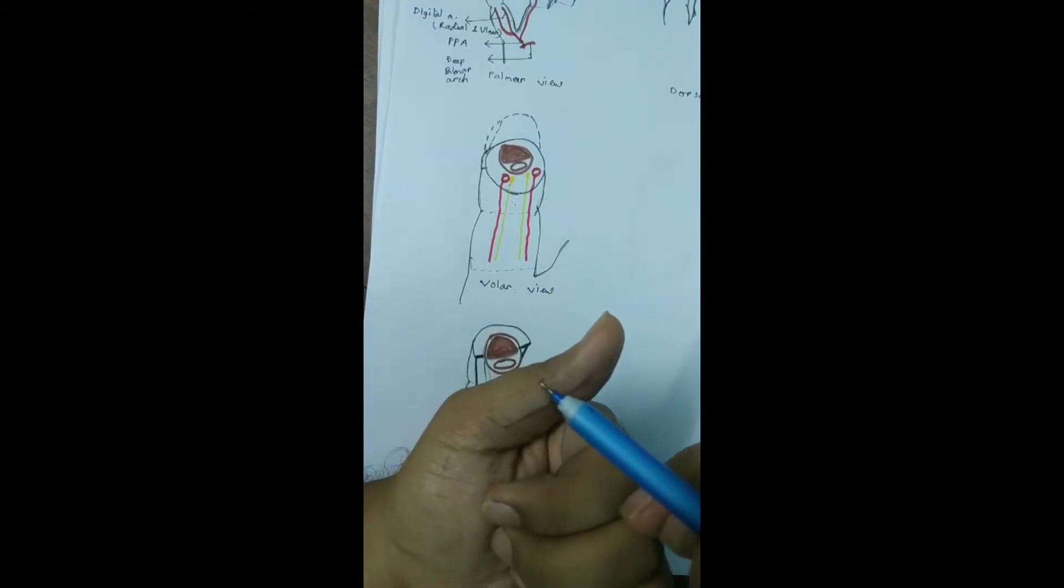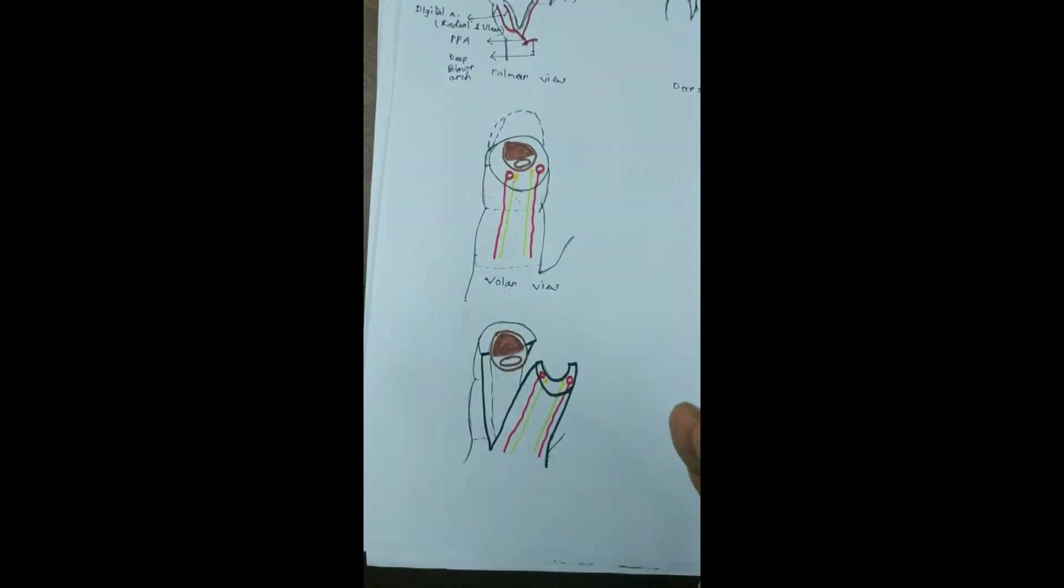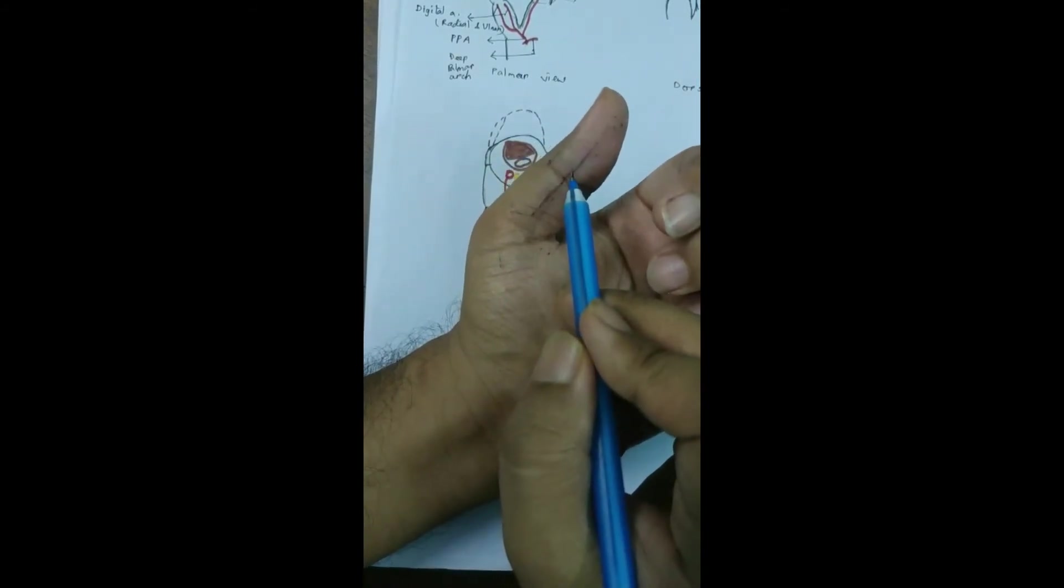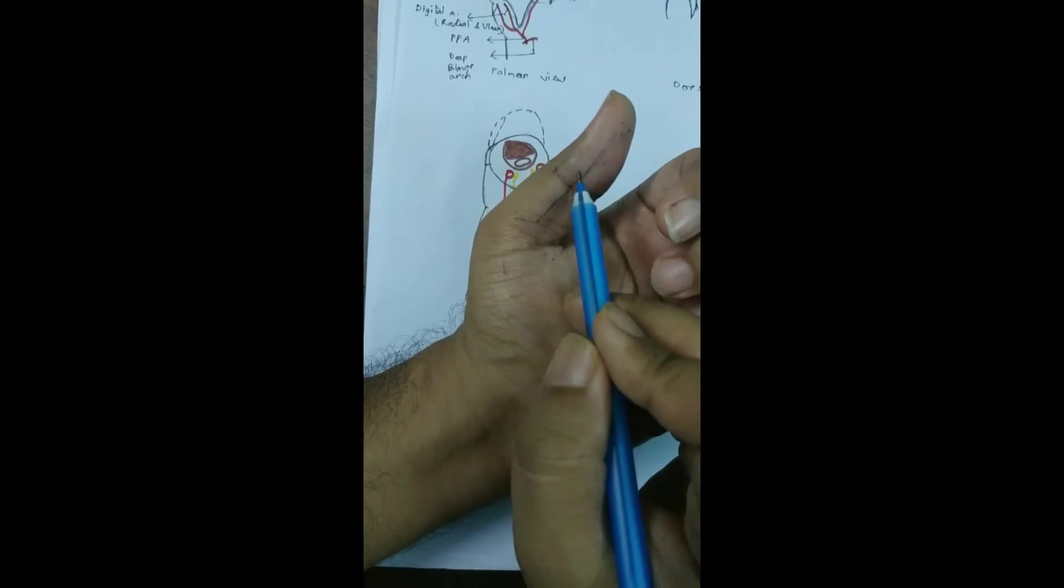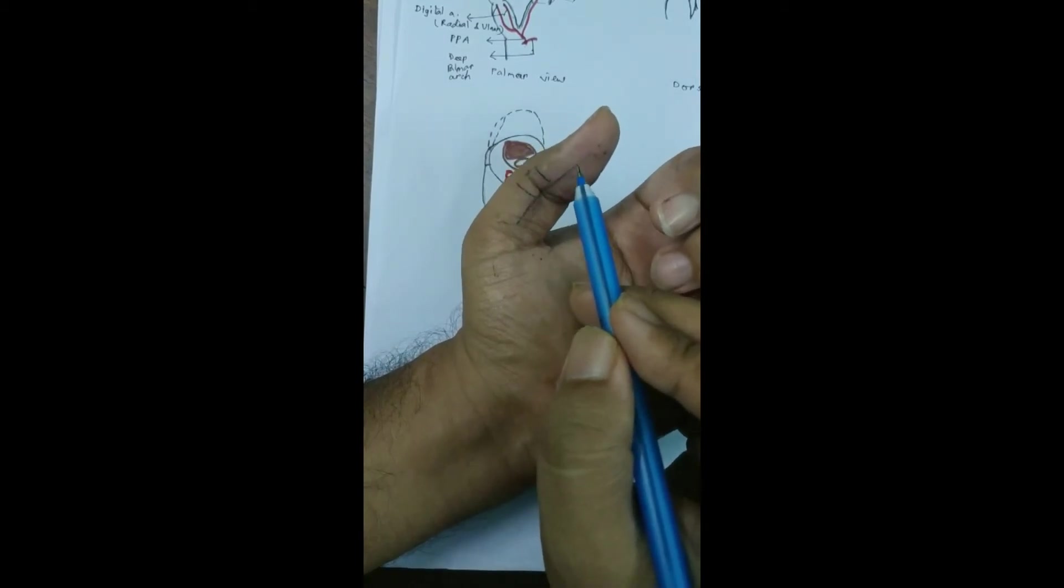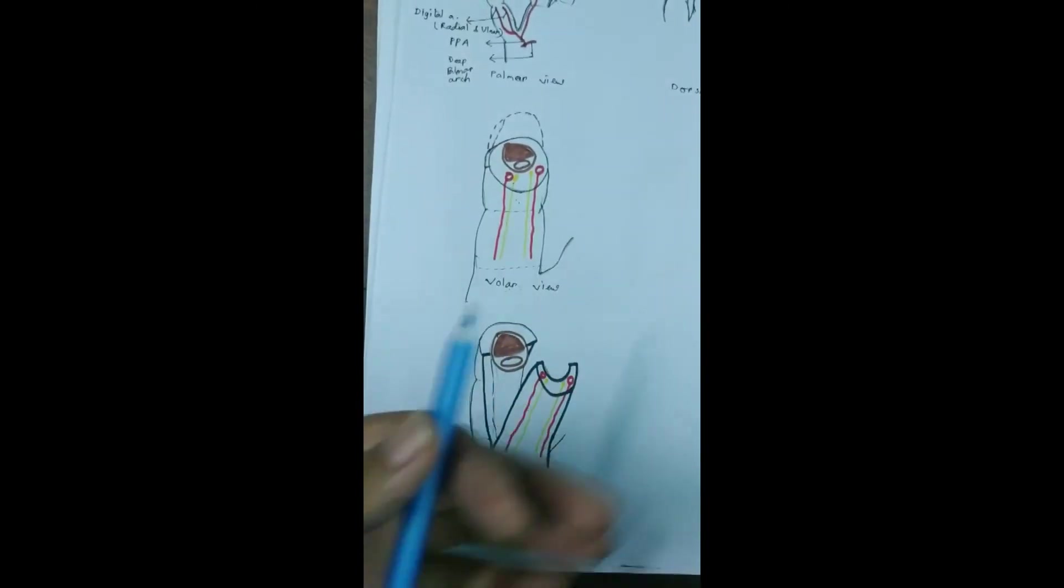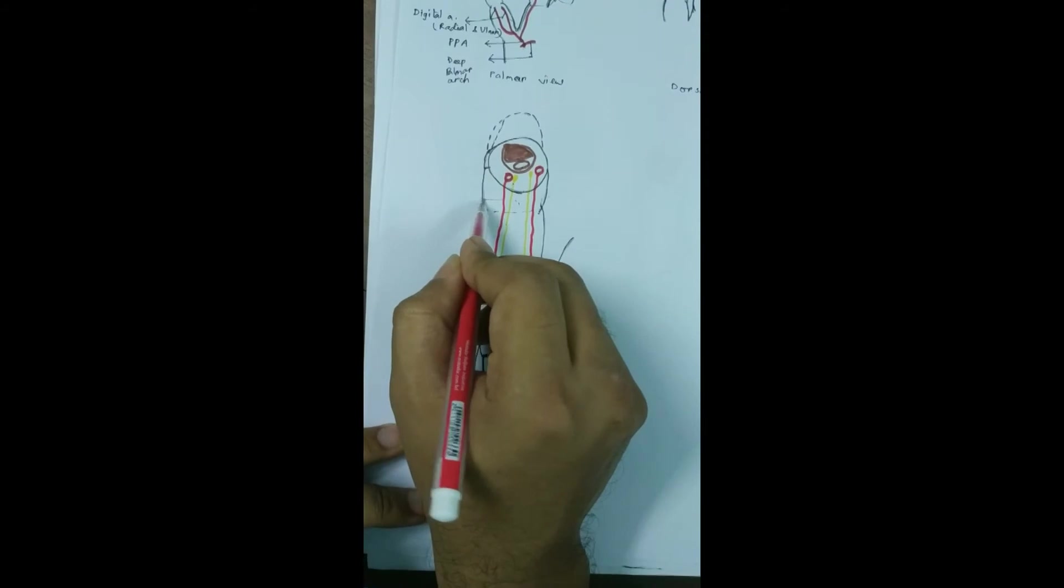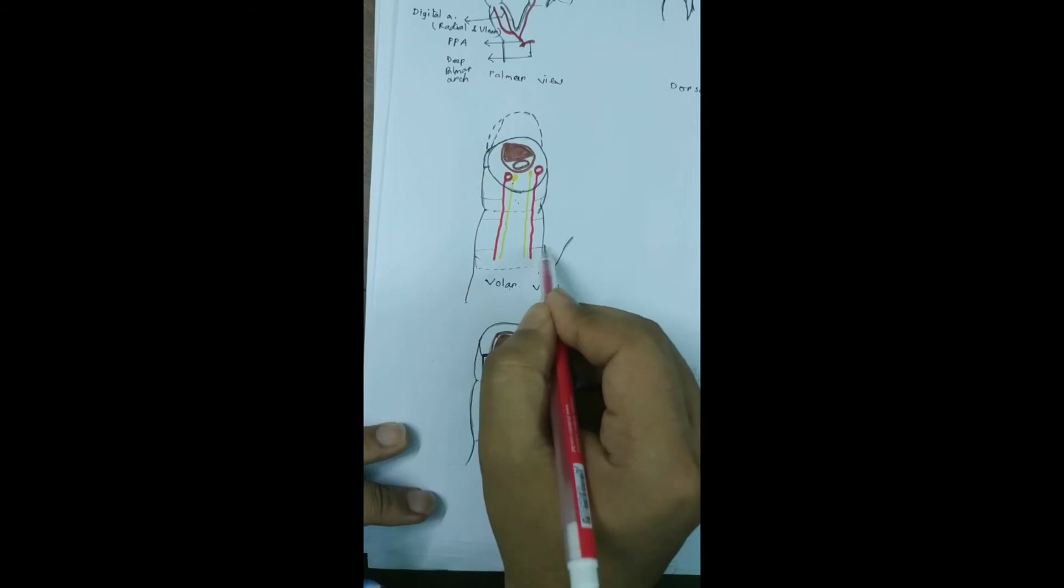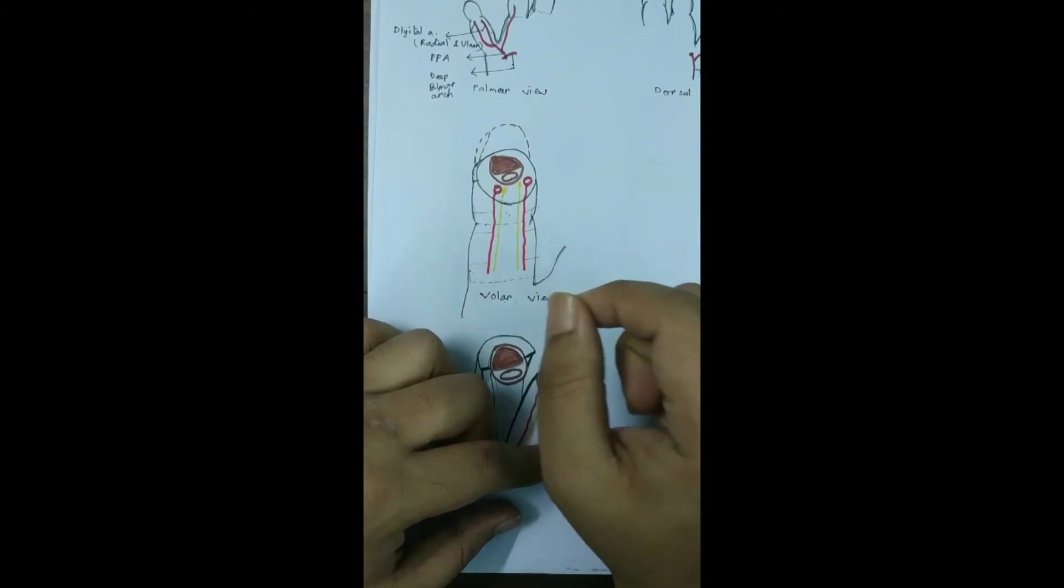We get the digital arteries with the flap. There are some perforators from the digital arteries just proximal and distal to the IP joint which we encounter while elevating the flap. Do not forget the principles of hand surgery: good light, good surgeon, hand table, and tourniquet.